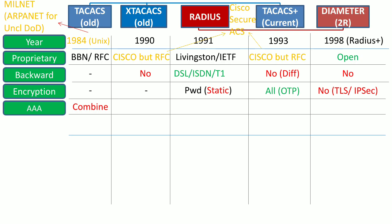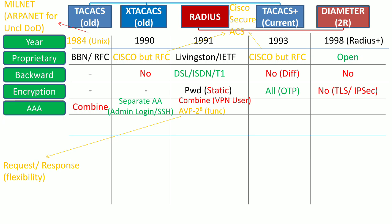TACACS combines the authentication and authorization information in the same session. Whereas in XTACACS and TACACS+, there is separate authentication and authorization — for example, each command of an admin while using SSH is authorized individually. RADIUS also combines these triple-A services, and therefore it is used for VPN users instead of for admin logins or authorizing admin commands.